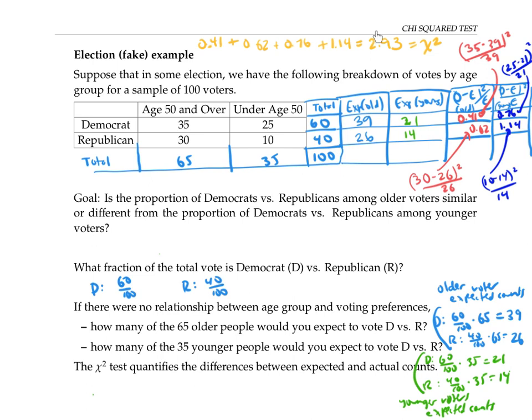So what does that number mean? If it's a big number, then that's saying that my observed counts are pretty far off from my expected counts, suggesting that there is some relationship between age and voting preference. While a small number says that observed counts are pretty close to expected counts, suggesting that there's not really anything going on. I'm just getting about what I would expect if there's no relationship.